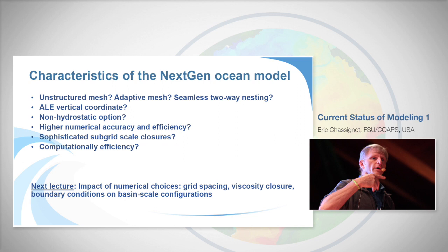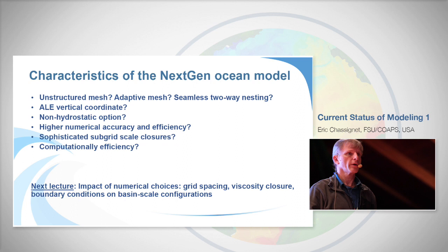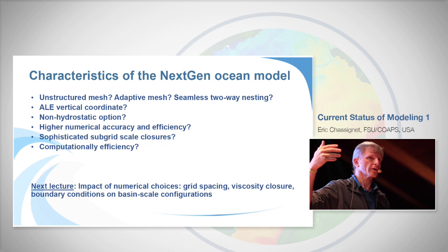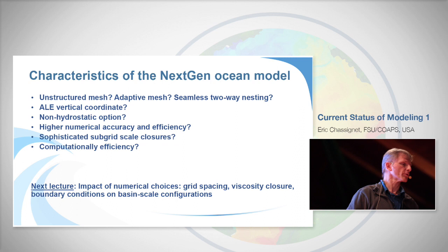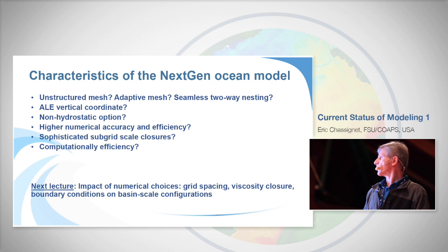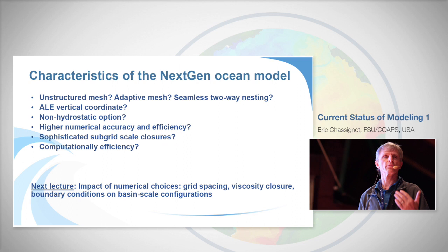There are questions about Moore's Law — the doubling of computer efficiency every so many years — and we may have reached a limit. It's unclear we can sustain the increase in computer speed seen over the past 10 years. On Saturday I'll give examples of the impact of numerical choices on basin-scale simulation: grid spacing, viscosity closure, and boundary conditions all still matter significantly.